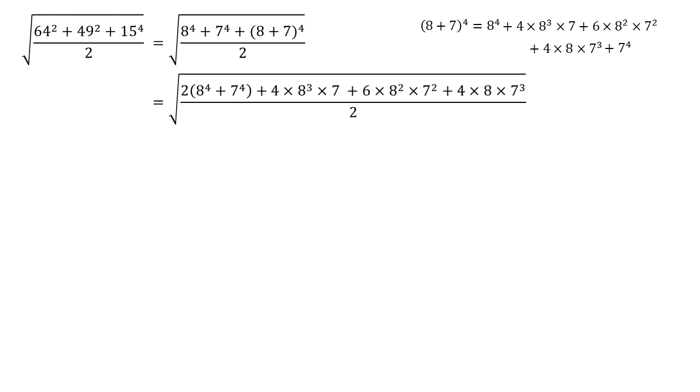All of those terms on the top are multiplied by even numbers. So we can divide through by the 2 to cancel out the fraction. So we're left with the square root of 8 to the 4 plus 7 to the 4 plus 2 times 8 cubed times 7 plus 3 times 8 squared times 7 squared plus 2 times 8 times 7 cubed.